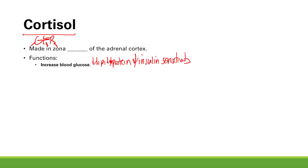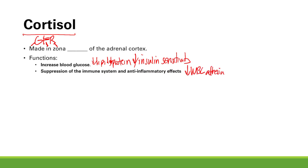There are a couple more functions of glucocorticoids. The next one is suppression of the immune system and anti-inflammatory effects. It does this by reducing inflammatory mediators such as prostaglandins and IL-2. It also reduces white blood cell adhesion. If white blood cells can't adhere to vessel walls, you'll see increased white blood cells measured in the blood, but they won't be able to enter tissue — so overall it's a suppression of the immune system.